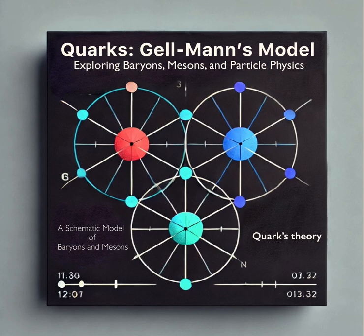He proposed charges of minus one third, minus one third, and plus two thirds. Okay so we've got these weird fractionally charged quarks. But how do they build up the particles we actually see? Like protons and neutrons? That's the beauty of it.